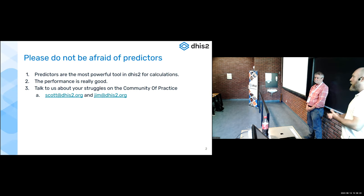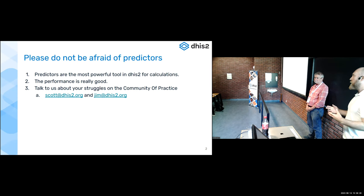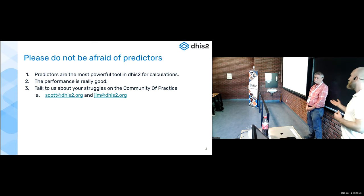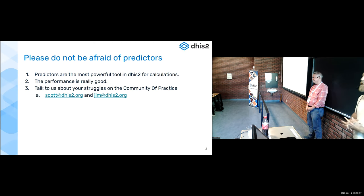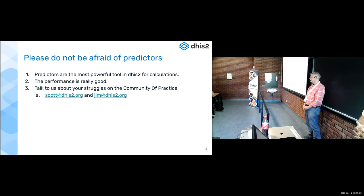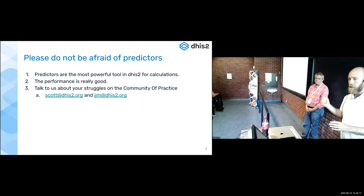When predictors were originally developed by Jim, they were powerful but ran into performance issues. People were making predictors for every single data element and running that job, and there were scalability issues. But technology continues to improve. Jim has improved predictor performance by 14,000 percent. Those issues from four years ago don't exist anymore. Performance has dramatically improved — stop living in the past and start using predictors because it'll actually work.